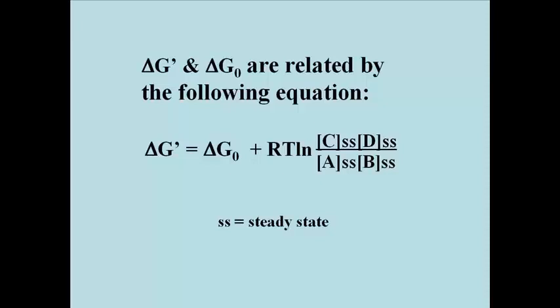Delta G prime equals delta G zero plus RT times the natural log of this expression. The concentration of C in the steady state, times the concentration of D in the steady state, those are the products of a reaction, divided by the concentration of A in the steady state, times the concentration of B in the steady state.